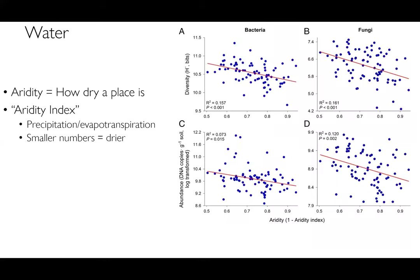Now we'll walk through a few of the important environmental conditions in soil. The first is water. Aridity is simply how dry a place is — high aridity means very dry, low aridity means very wet. The aridity index is a combination of precipitation as well as evapotranspiration, which is when water evaporates off the ground and goes back into the atmosphere. Smaller aridity index numbers equal a drier place; higher numbers mean a wetter place.